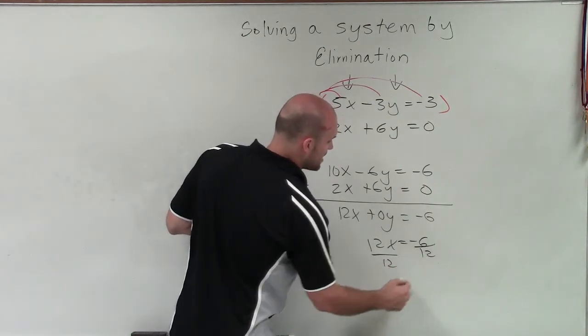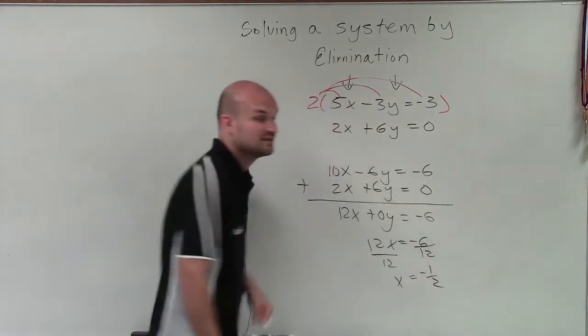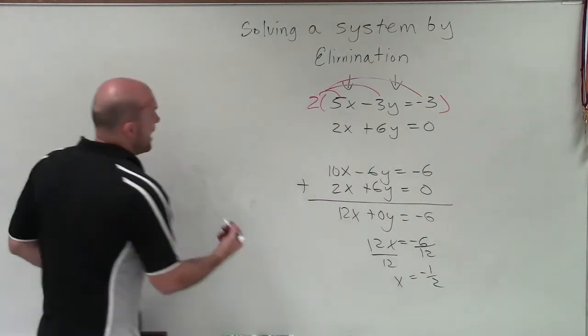Divide by 12, divide by 12, x equals negative 1 half. So now we know that the value of x is negative 1 half.